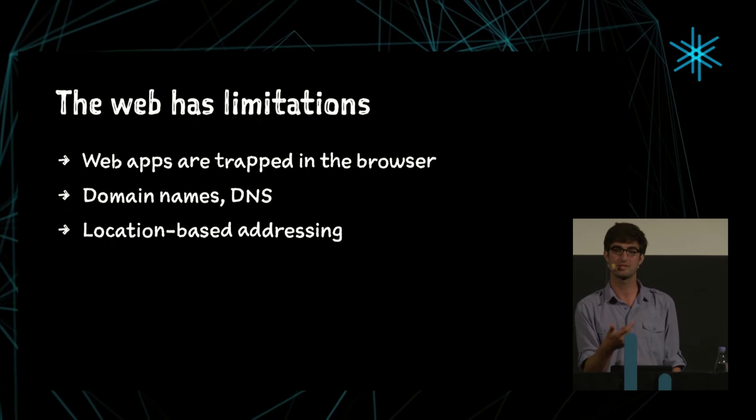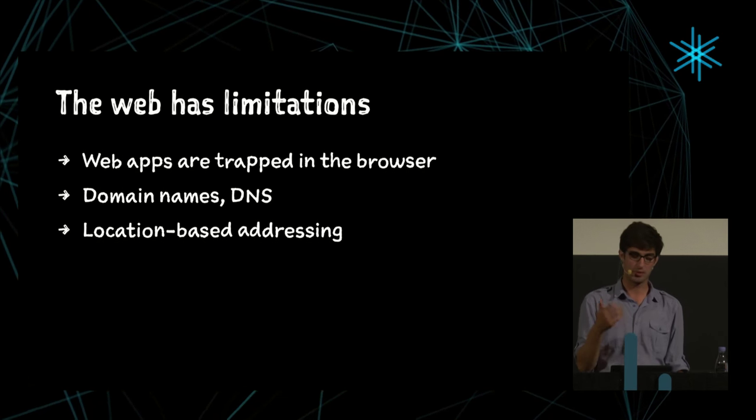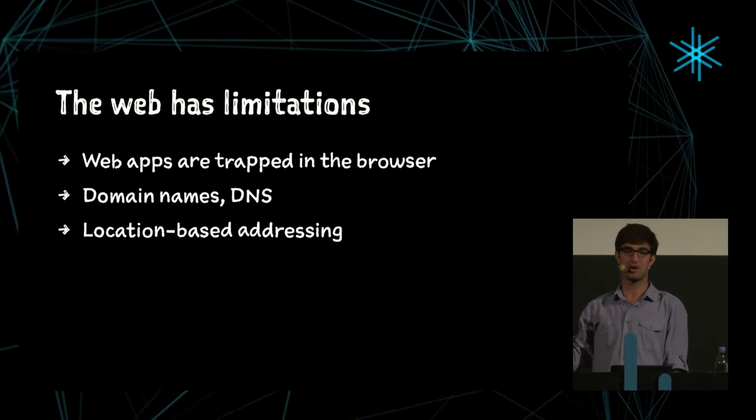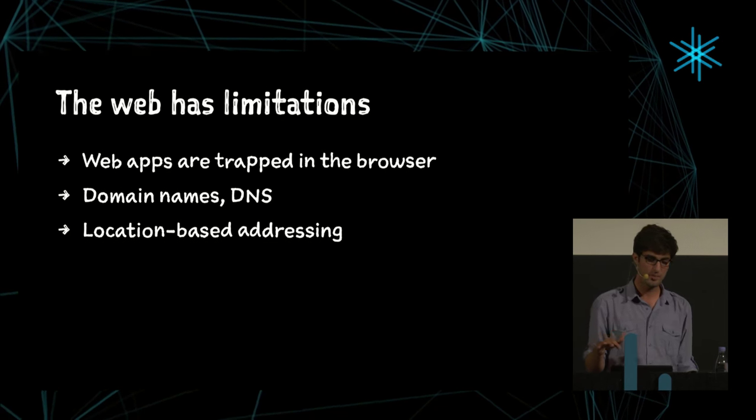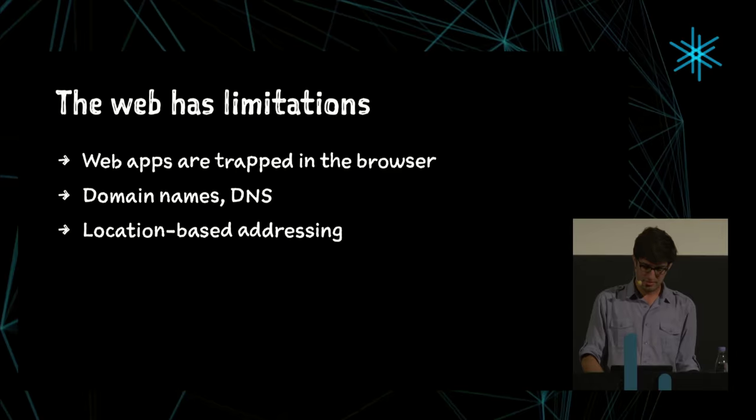Another limitation is actually one of the web's strengths: the URL. URL stands for Uniform Resource Locator — it describes the location of a resource. But that resource could move or disappear. What you really want is not location-based addressing but content-based addressing — if someone in the world has the content you want, you should be able to get it no matter where it is. That's the basis of systems like BitTorrent.